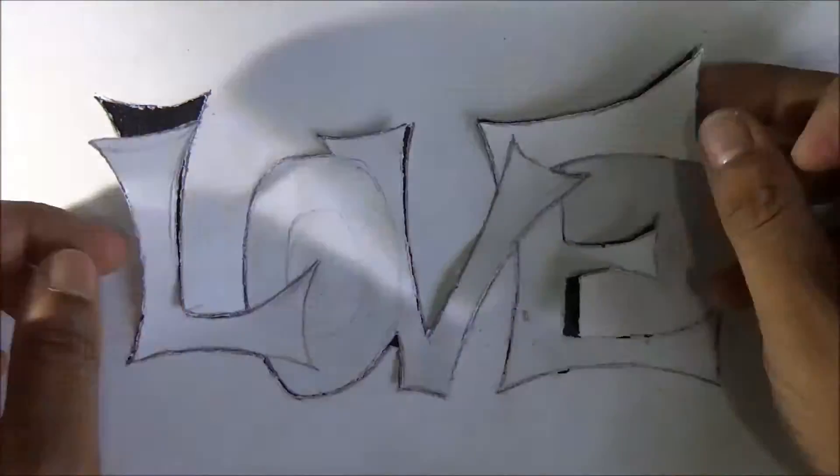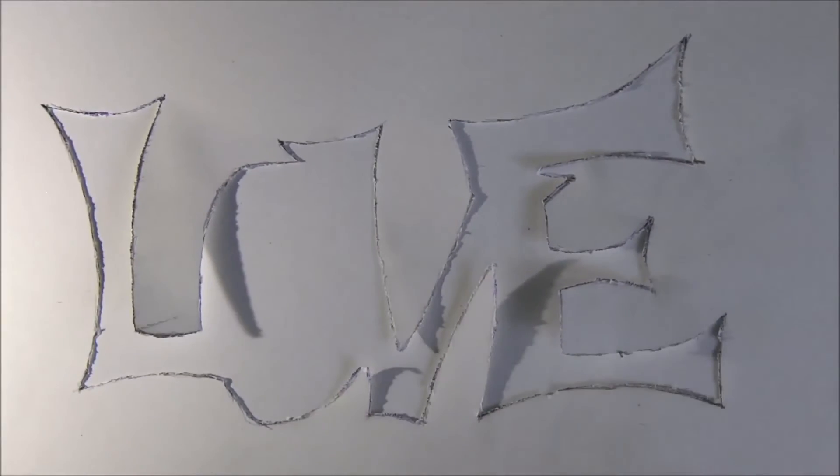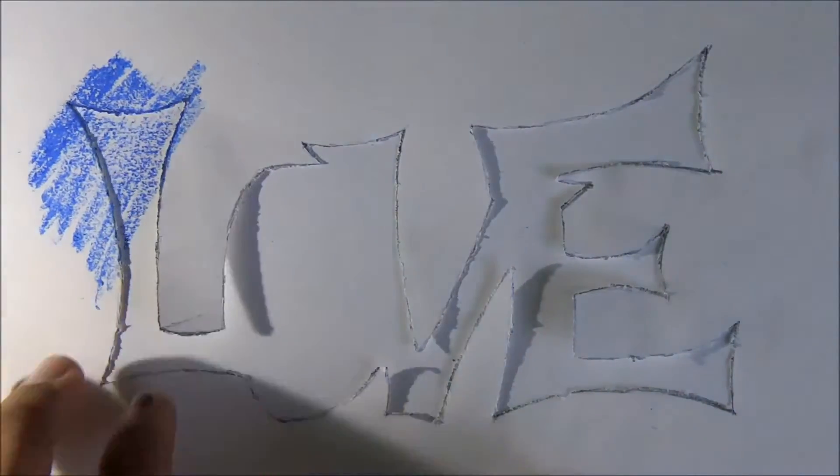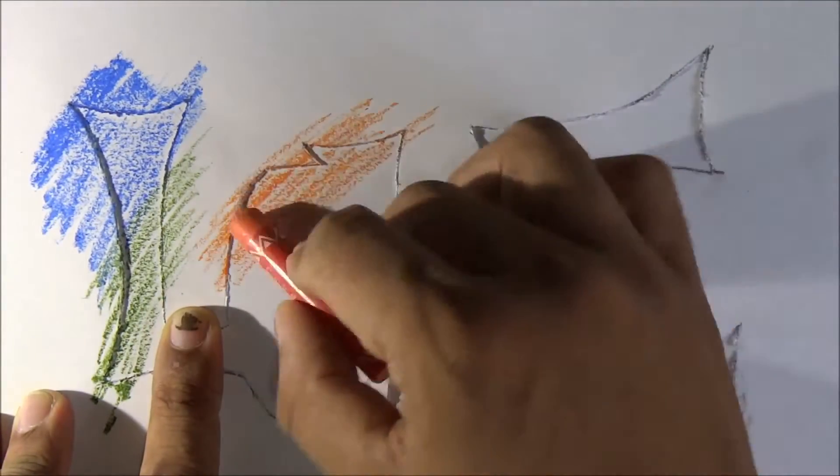So the L-O-V-E has been cut out. Now we place it over another paper, right like this. You can see the graffiti shape is there - we just kept it over it. Now I'm using crayons to fill the colors into this solid shape. This is a unique type of crayon which gives a texture.